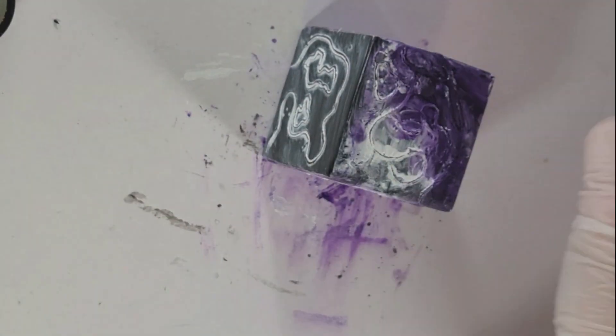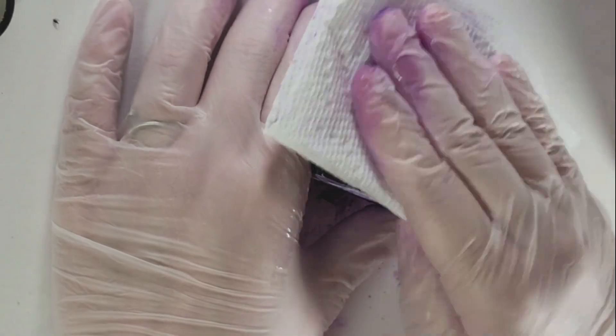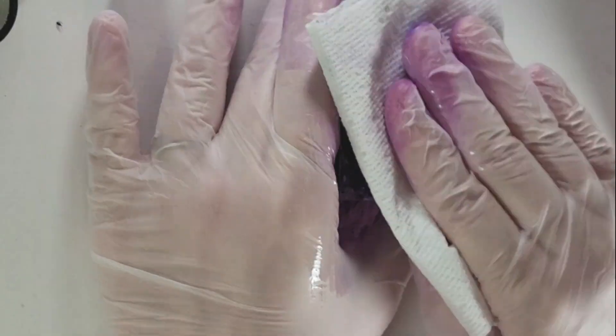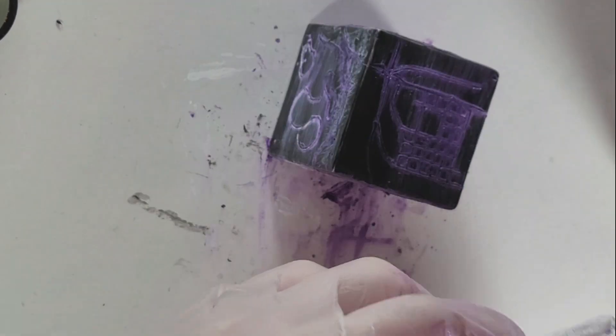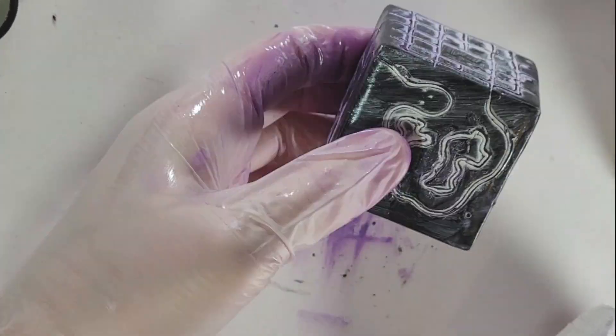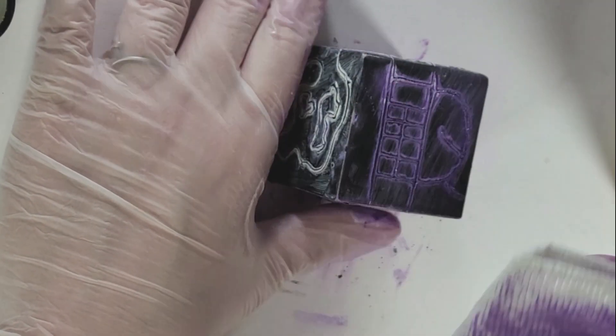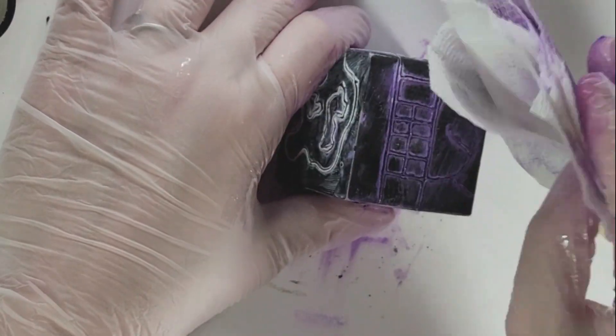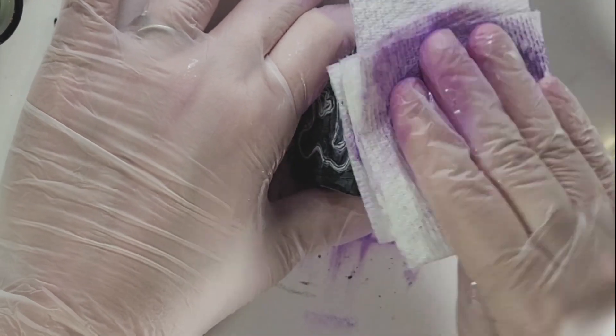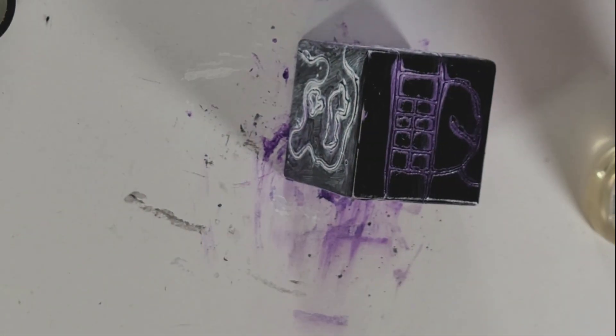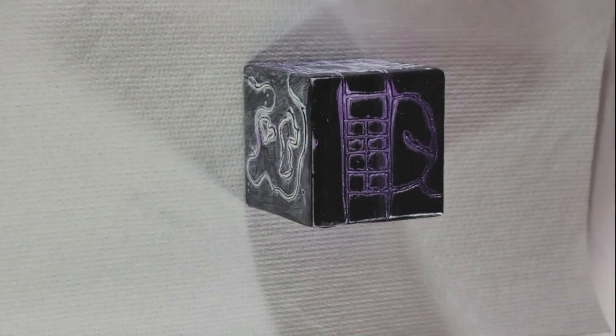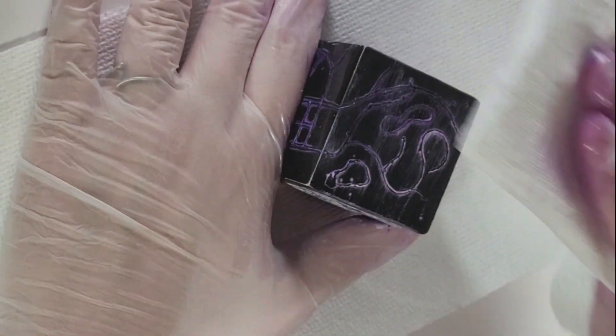And then because when you carve into the wax, you get wax residue that builds up on the sides of your line. And it creates kind of this buildup that makes your lines look less like lines and more like crevices or different things, and it can affect the way the oil paint, it can affect the way the lines look with the oil paint in them.